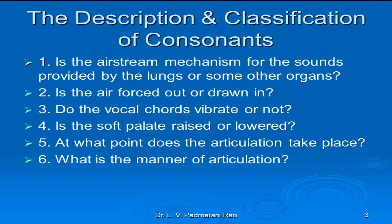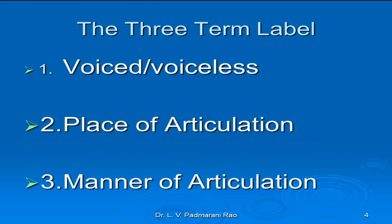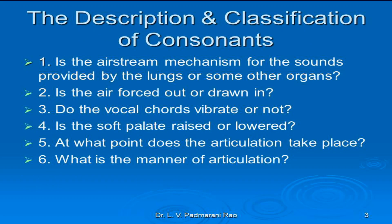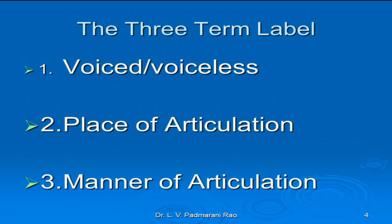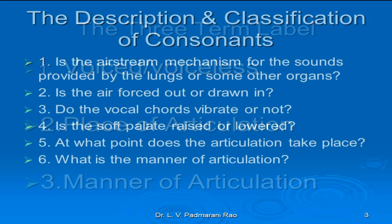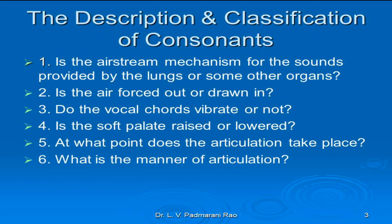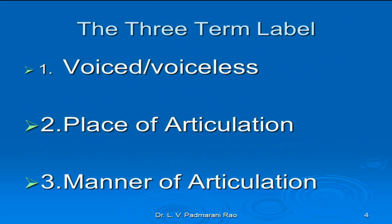Thereby we are left with only three questions which will become the three-term label for describing a consonantal sound in English. Number one: voiced or voiceless, depending upon whether the vocal cords vibrate or not. Number two: the place of articulation, based on at what point the articulation takes place. And number three: the manner of articulation, referring to what stricture is maintained in the oral cavity.